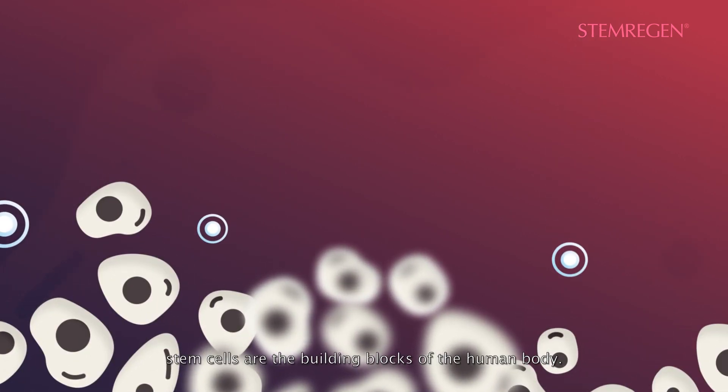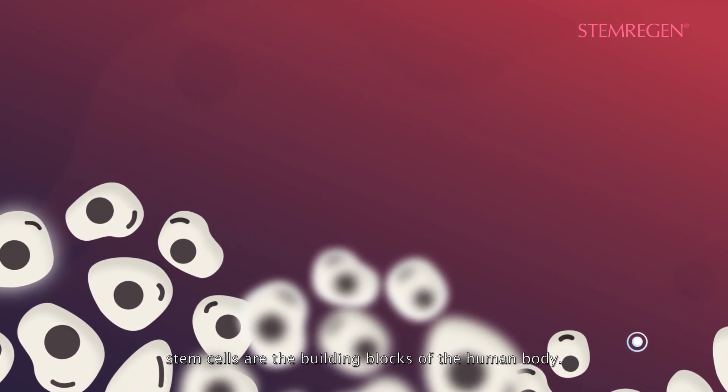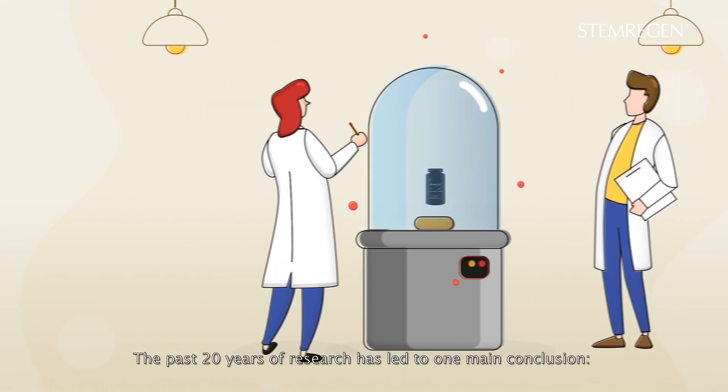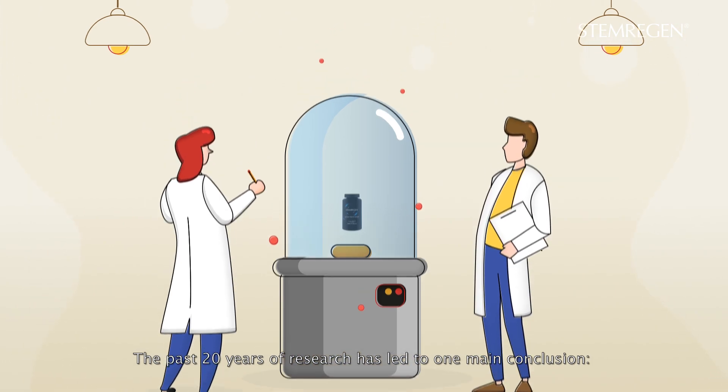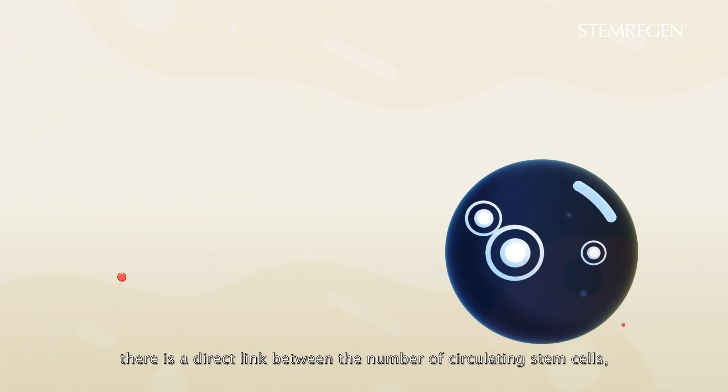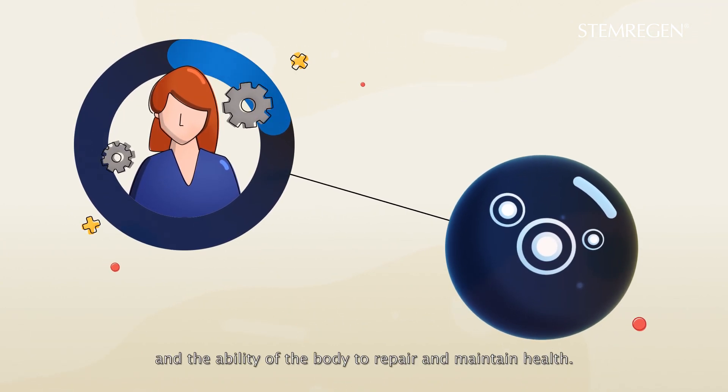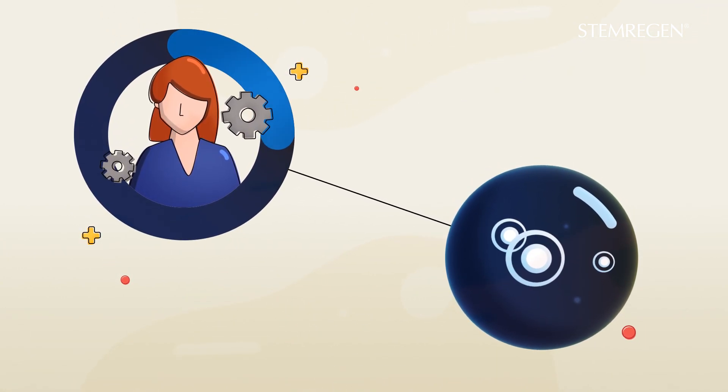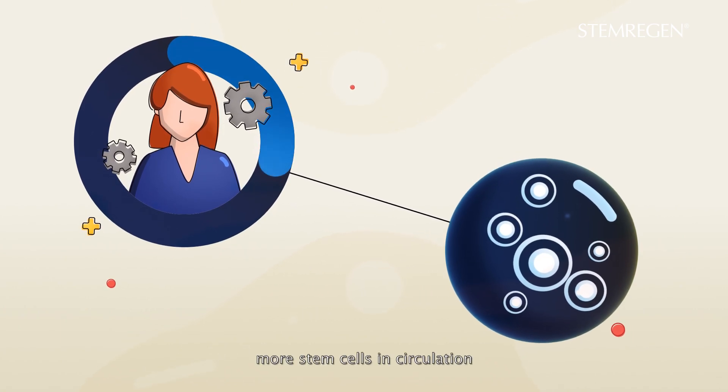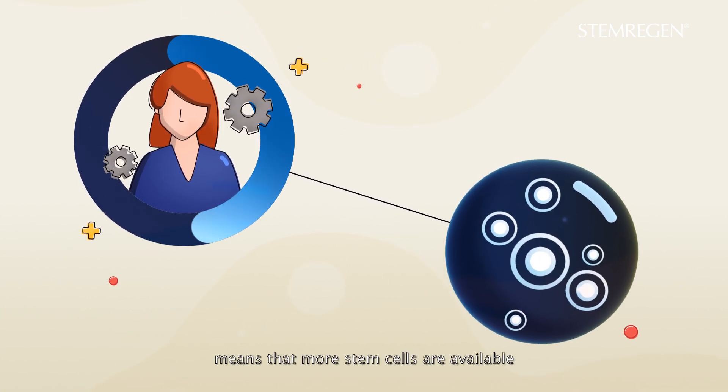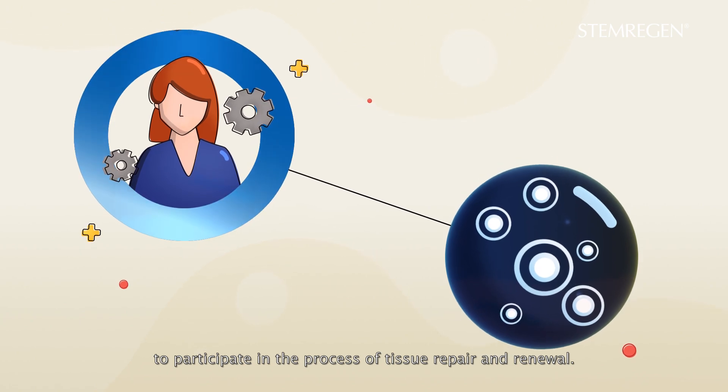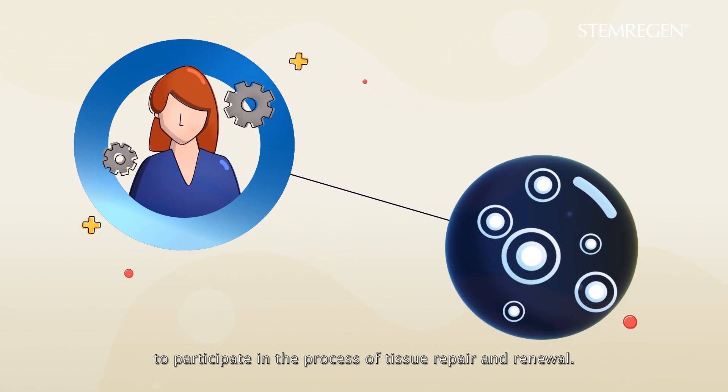Stem cells are the building blocks of the human body. The past 20 years of research has led to one main conclusion. There is a direct link between the number of circulating stem cells and the ability of the body to repair and maintain health. In other words, more stem cells in circulation means that more stem cells are available to participate in the process of tissue repair and renewal.